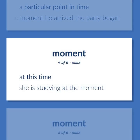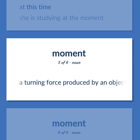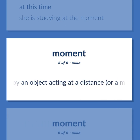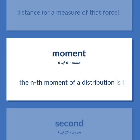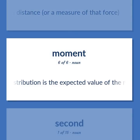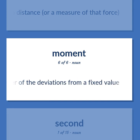At this time. She is studying at the moment. A turning force produced by an object acting at a distance, or a measure of that force. The Nth moment of a distribution is the expected value of the Nth power of the deviations from a fixed value.